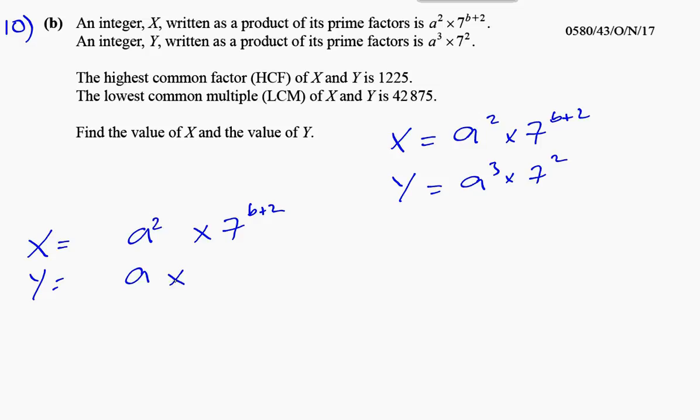Now let's think of the LCM and the HCF. The lowest common multiple is when you find the highest form of each of these. So it's a² and a³, it's going to be a³. And for the 7s, it's going to be 7^(b+2) because b can't be negative. So b+2 is a bigger power than 2. So that will be the LCM, and we're told that the LCM is 42,875.